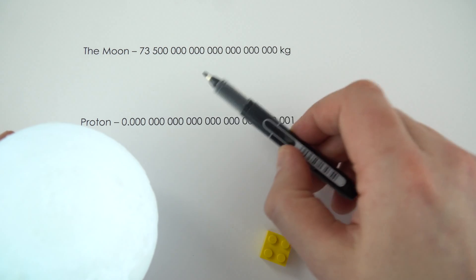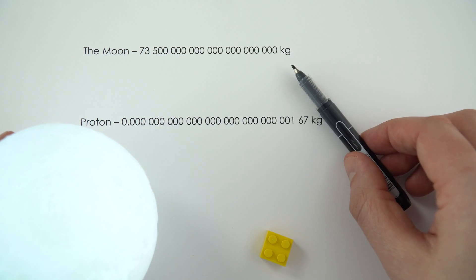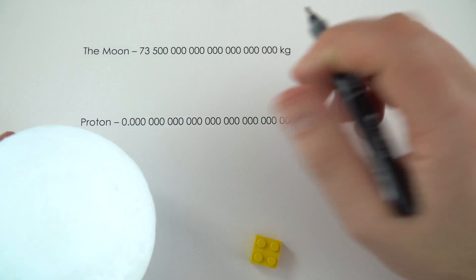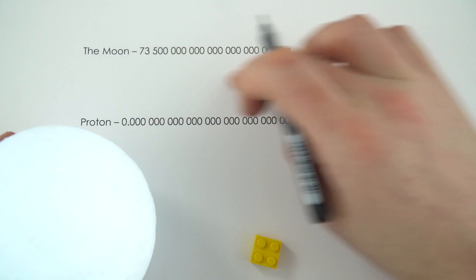Now the problem is that things which are really big have lots of zeros after the number, and things which are really small have lots of zeros in front of it. And there's a better way to write this, rather than just writing it out like this.